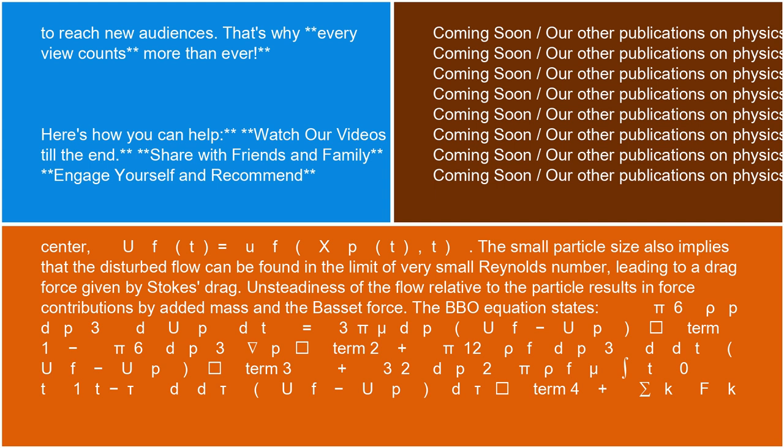π/6 ρ_p d_p³ du_p/dt = 3πμd_p(u_f - u_p) [Term 1] - π/6 d_p³∇p [Term 2] + π/12 ρ_f d_p³ d/dt(u_f - u_p) [Term 3] + 3/2 d_p² √(πρ_f μ) ∫₀ᵗ 1/√(t-τ) d/dτ(u_f - u_p) dτ [Term 4] + Σ_k F_k [Term 5].